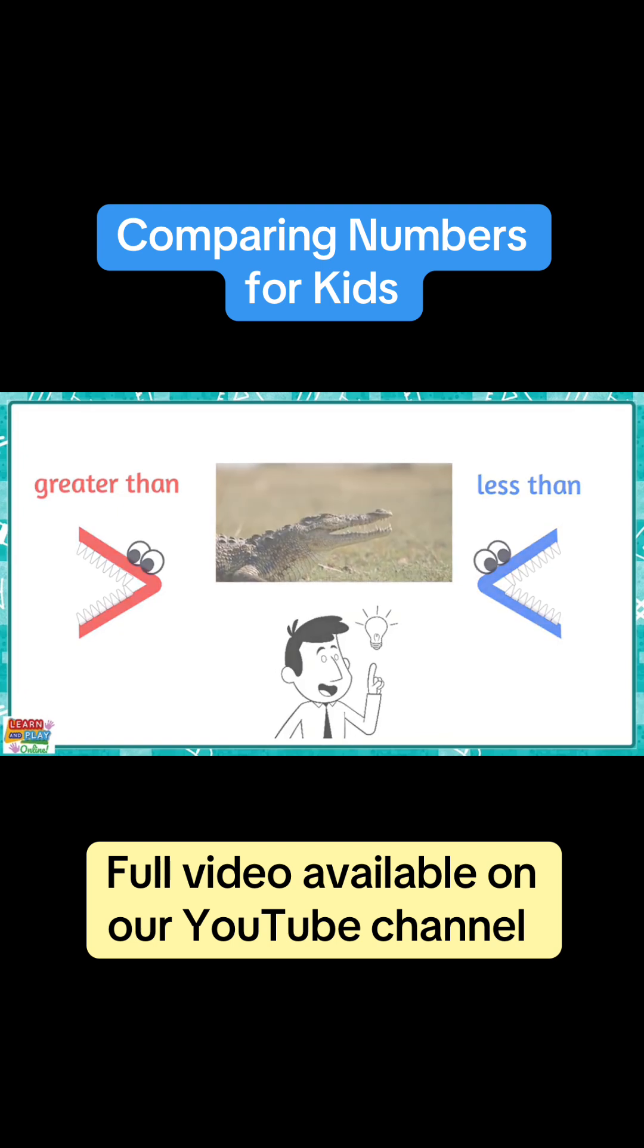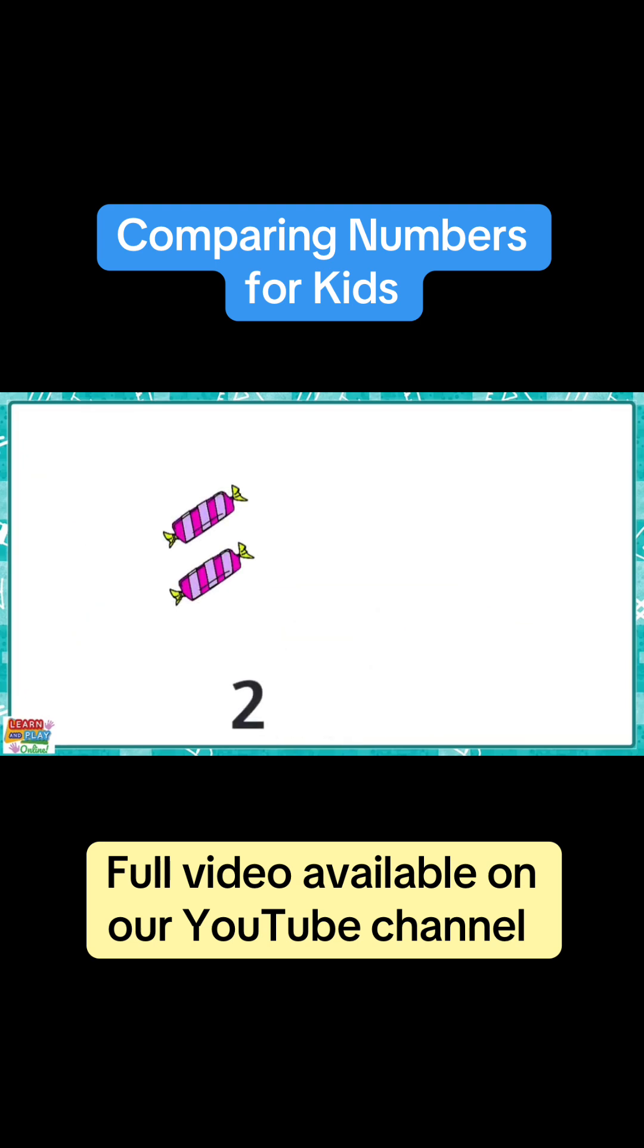Let's test it out. On this side, there are two lollies. And on this side, there are five. Which number is greater? That's right. The number five is greater. So we are going to use this symbol because it looks like the crocodile will eat the greater number, which is five.